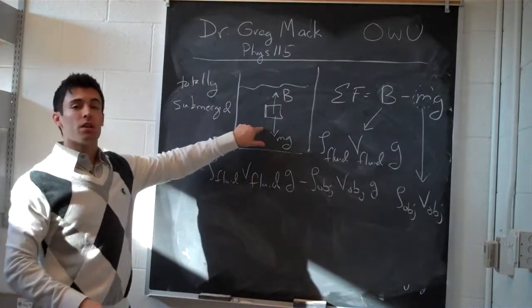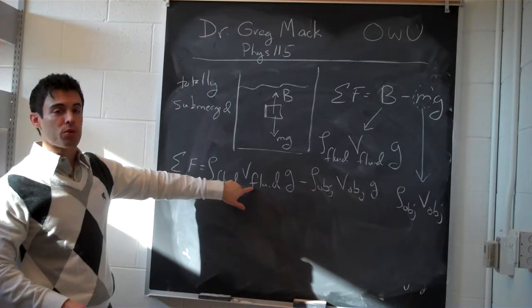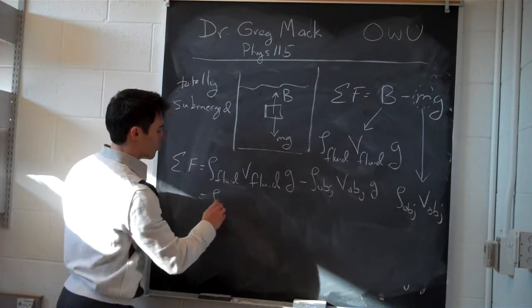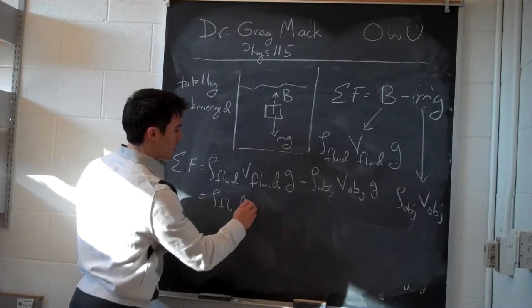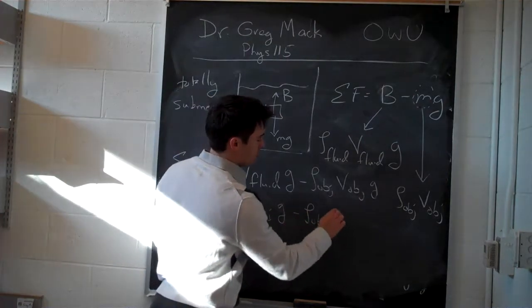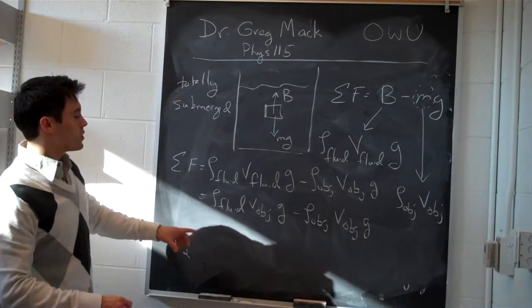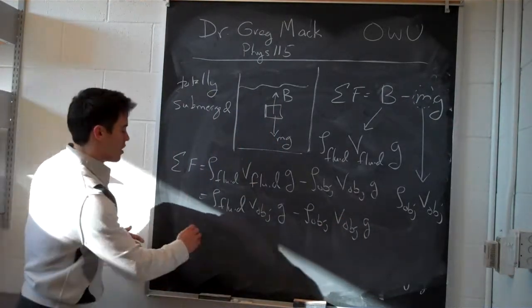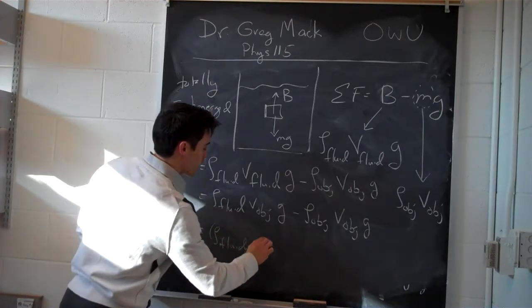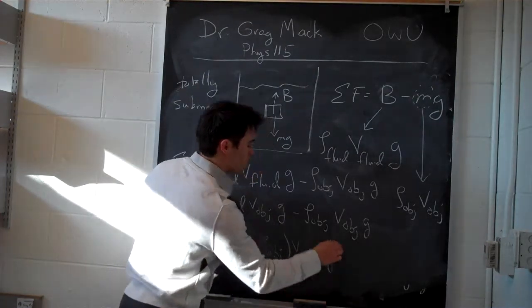Now, if the object is totally submerged, the volume of fluid displaced equals the volume of the object. So we substitute: the sum of forces equals rho_fluid times V_object times g minus rho_object times V_object times g. Factoring out what's common, that gives us (rho_fluid minus rho_object) times V_object times g.